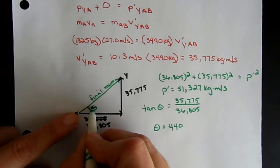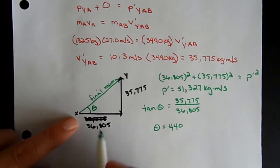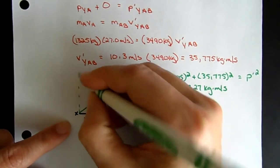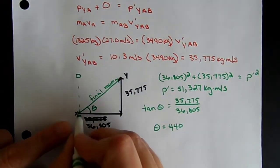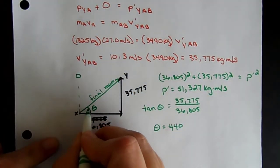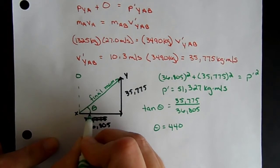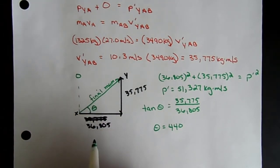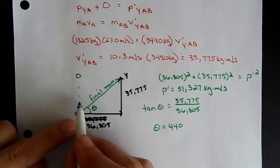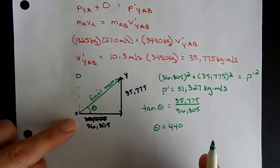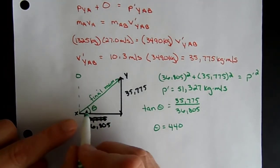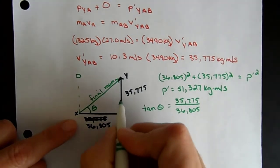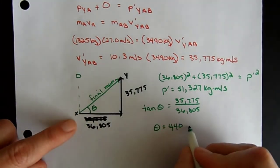So to describe the direction: this angle is 44 degrees. In our coordinate system, we could say that the cars travel at 44 degrees north of east after the collision.